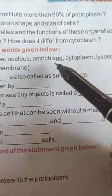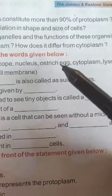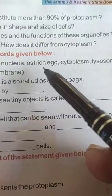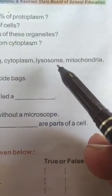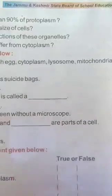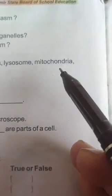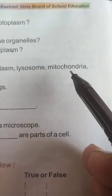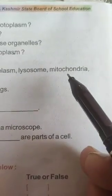Nucleus is the control center of the cell — the brain or boss of the cell. Ostrich egg is the largest cell, about 17 cm long and 13 cm wide. Cytoplasm is the fluid-like or jelly-like substance within the cell. Lysosome is also known as the suicide bag because more than 40 types of enzymes are present inside it, helping in breaking down toxic materials, unwanted materials, dead cells, and weak organelles. Mitochondria is known as the powerhouse of the cell, responsible for producing energy and cellular respiration.